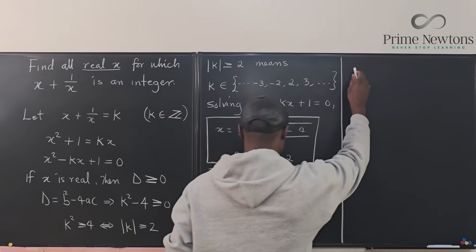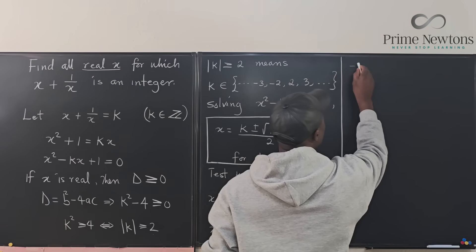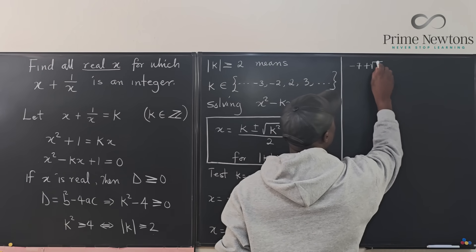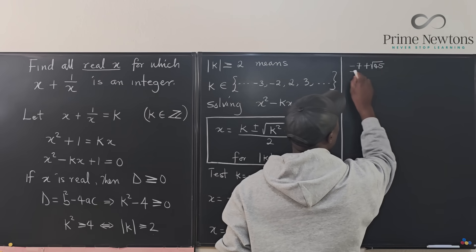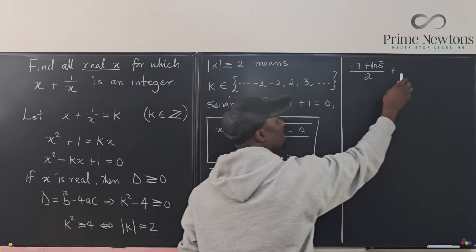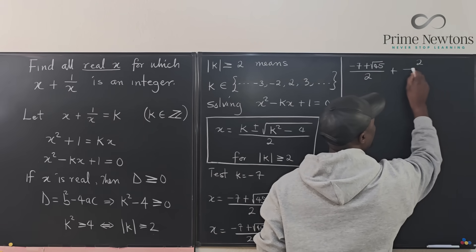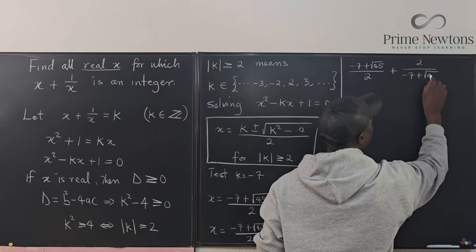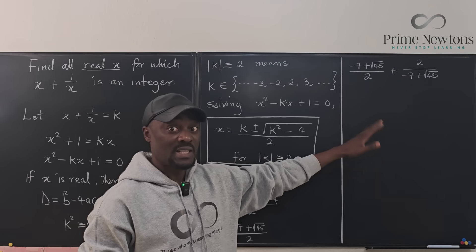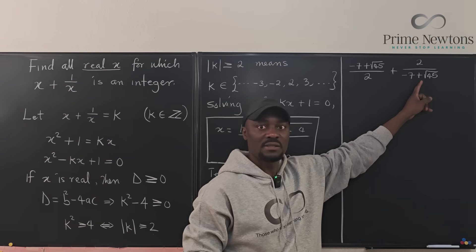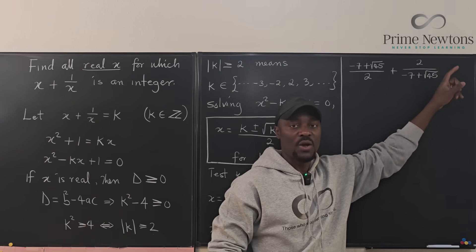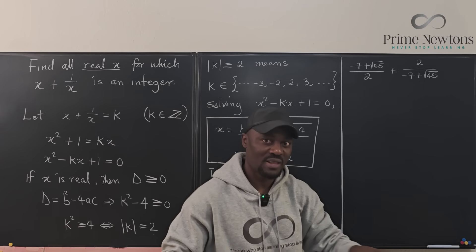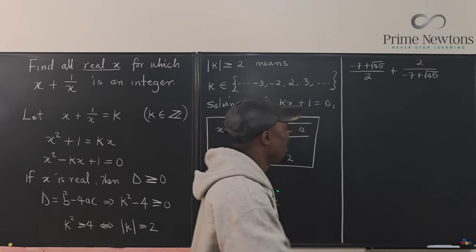So we're going to have negative 7 plus square root of 45 over 2 plus the reciprocal of this is 2 over negative 7 plus the square root of 45. Now there's so many ways to do this addition. You can rationalize this by multiplying it by this conjugate or you can just do the elementary school multiplication. You do the cross multiplication and then you multiply the base.